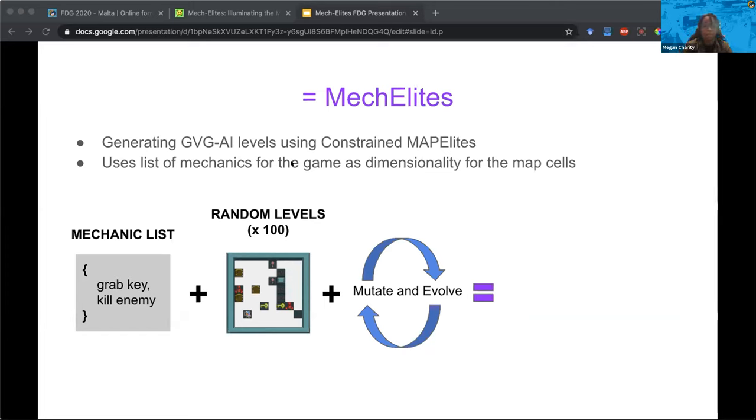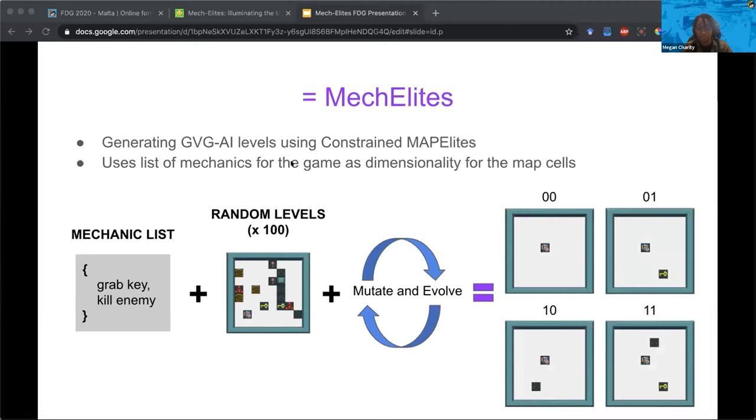For a high-level description, take a critical mechanic list for the game Zelda, for example, where the enemy must grab a key and kill an enemy in order to win the level. With this list, 100 or so randomly generated levels and some mutation and evolution by the system, we can ideally generate a set of levels demonstrating each mechanic in both isolation and combination.